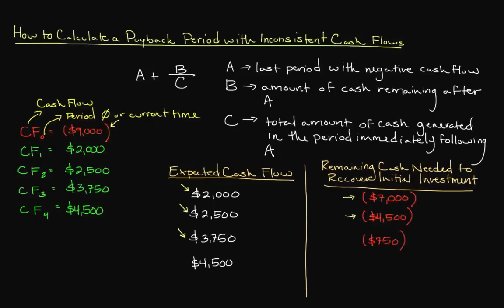At this point we only need $750 in positive cash flow to break even and cover our startup costs of $9,000. In year 4 we expect to receive $4,500, which is much greater than the $750 needed to recover our initial investment. Since we will experience positive cash flow in year 4, year 3 represents the last period with negative cash flow — meaning year 3 represents A.